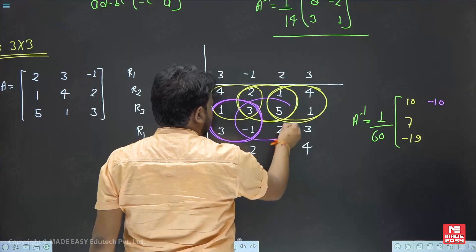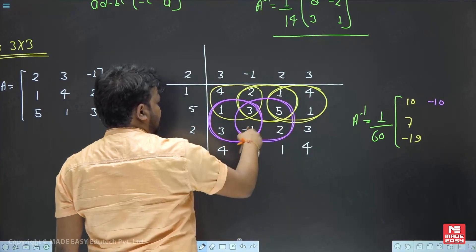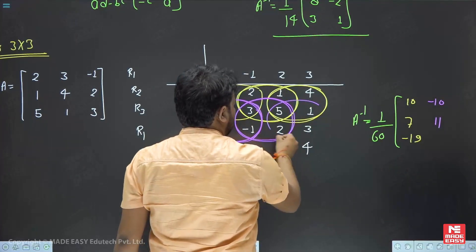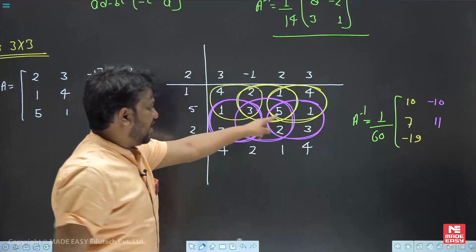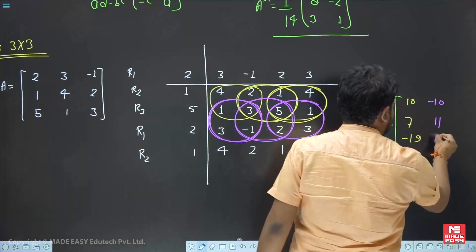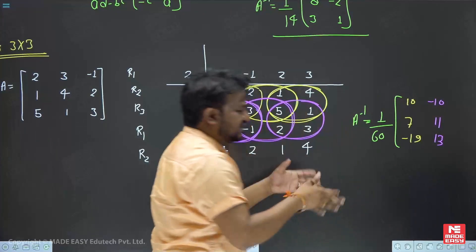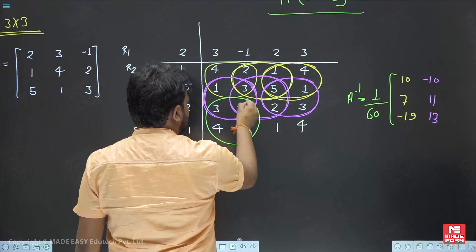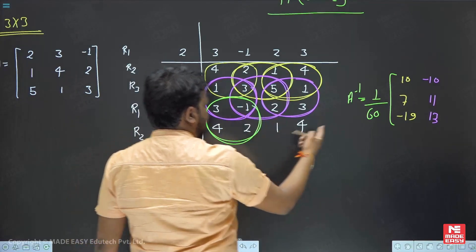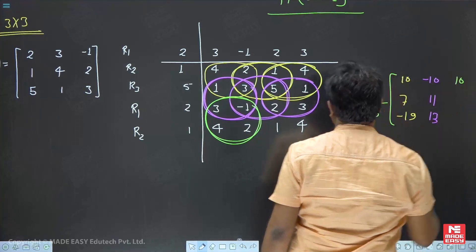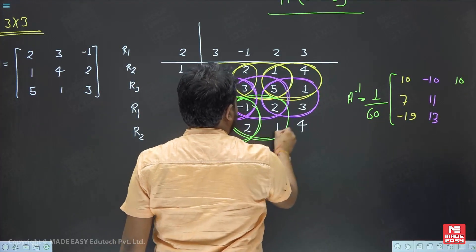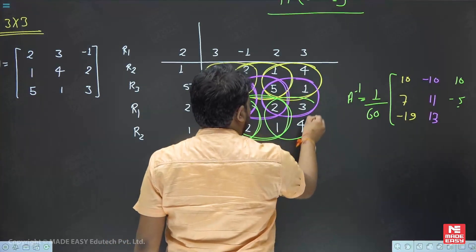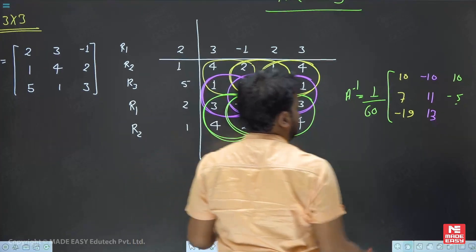Continuing: 3×2 gives 6. Next value: 6 minus (minus 4) = 10; write 10. Next: minus 1 minus 4 = minus 5; write minus 5. Finally: 4×2 minus 3 = 5; write 5. We are doing row-wise and writing column-wise throughout.